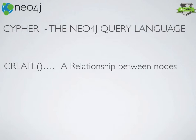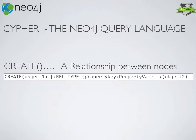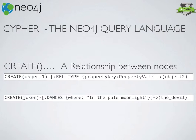So we've got our nodes — how do we define a relationship between them? We're still using CREATE but we show the relationship using dashes and square bracket notation: CREATE the relationship between object one and object two, then define the relationship type. The convention is uppercase with underscores instead of spaces. So we might create Joker, who likes to dance — and we can add extra metadata to that, like he likes to dance in the pale moonlight with the devil.